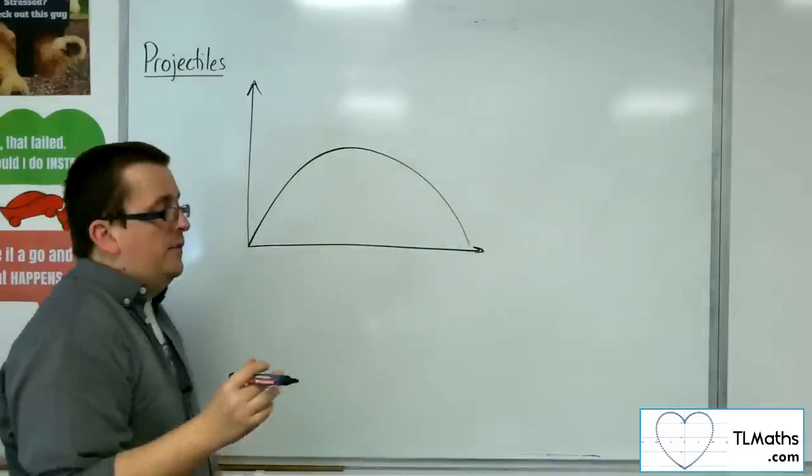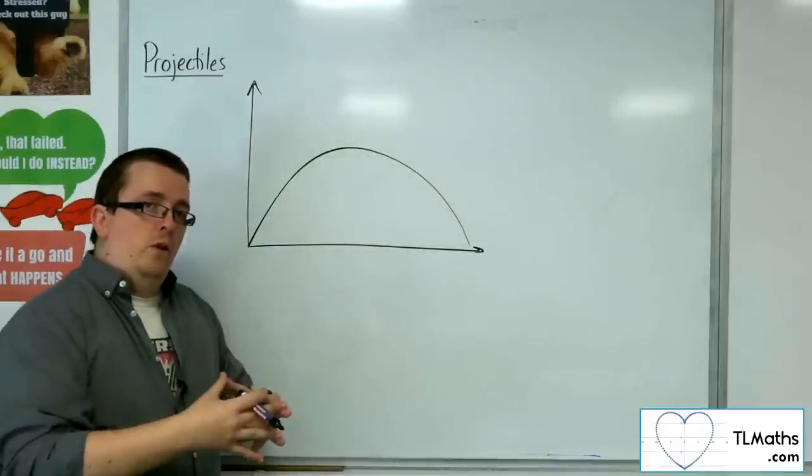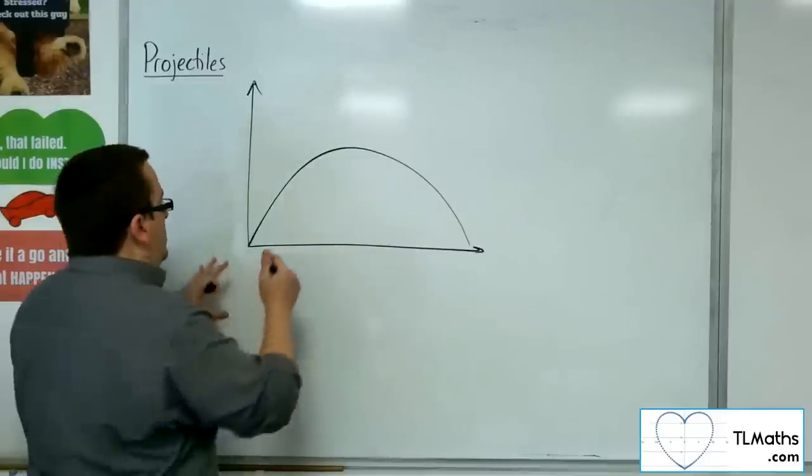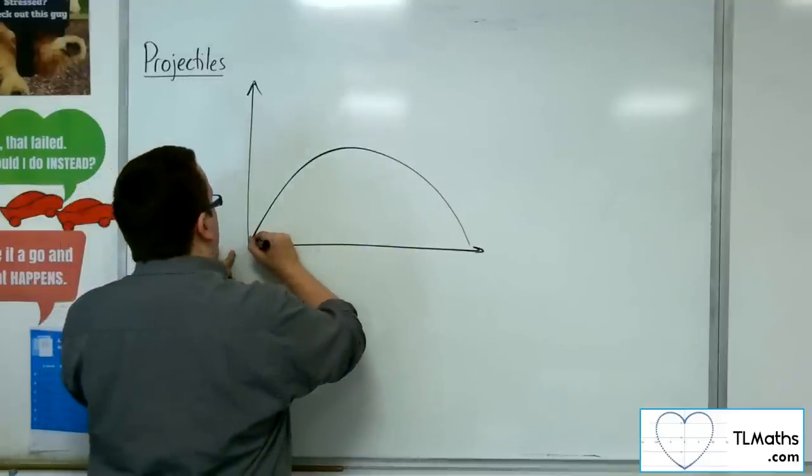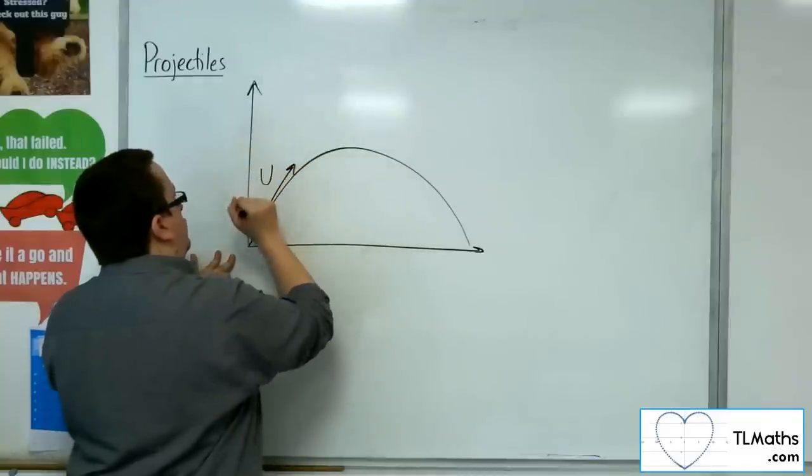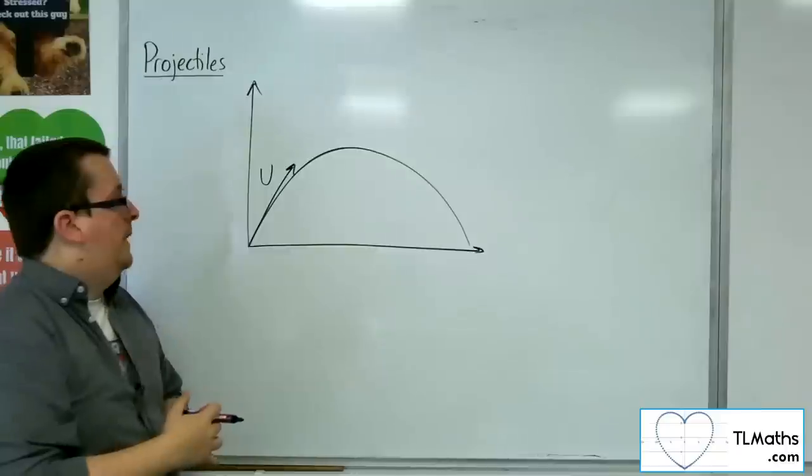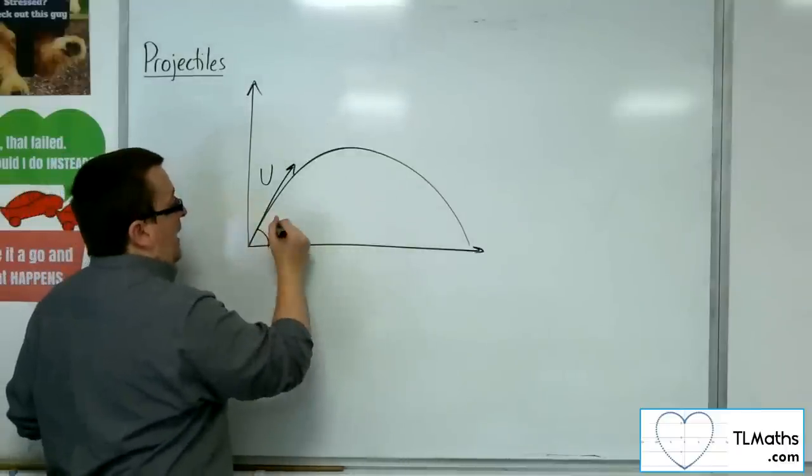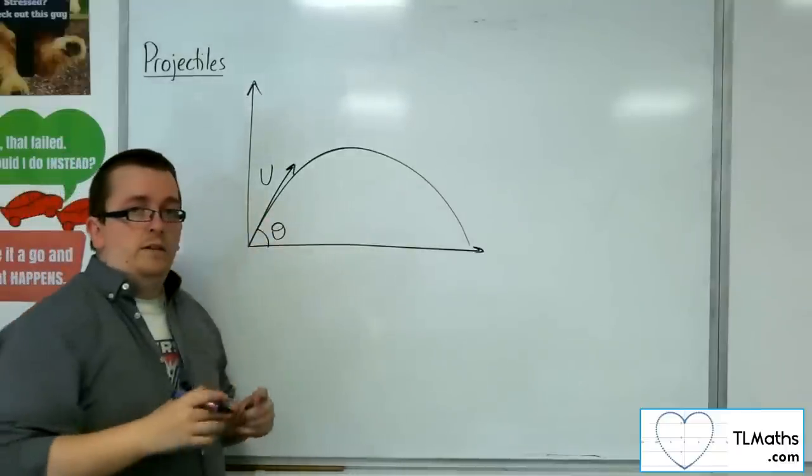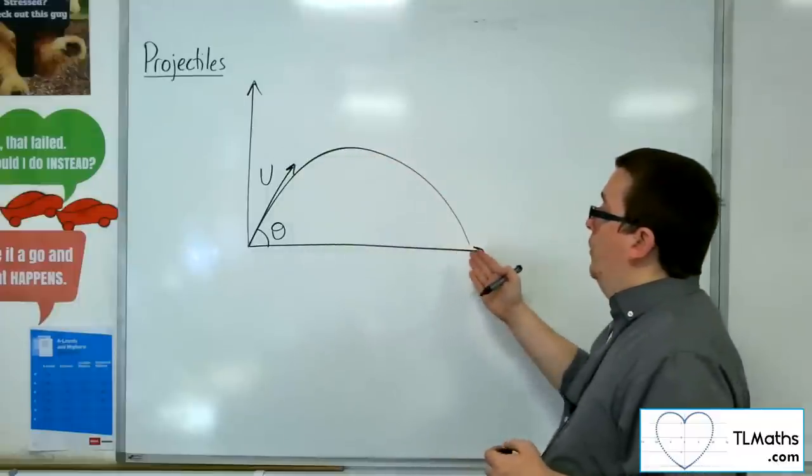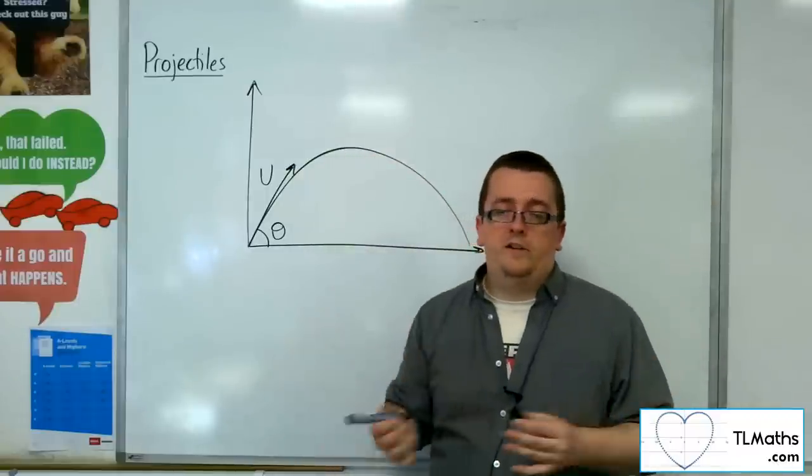Now, the particle will be thrown with an initial velocity. So we could represent that by saying we've got an initial velocity u, and I'm projecting the ball upwards at an angle of theta to the origin. And this is the path of the ball or the particle.